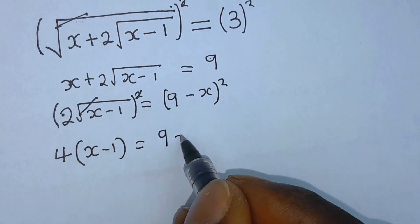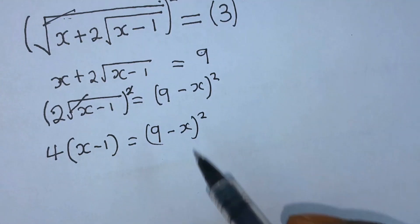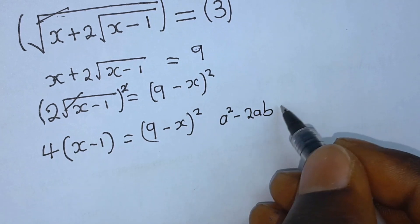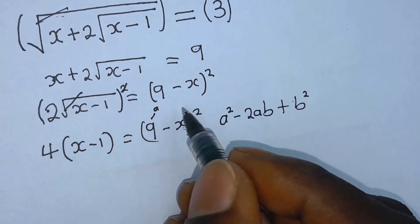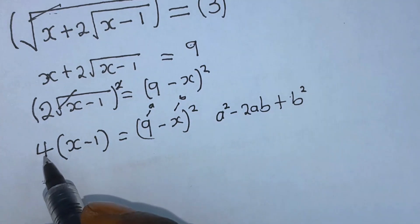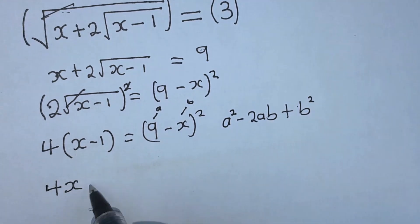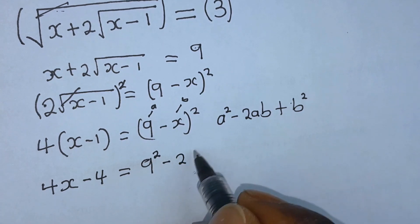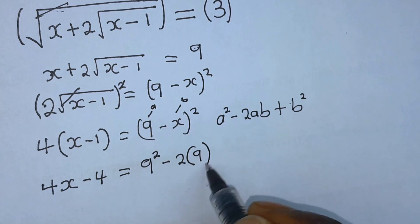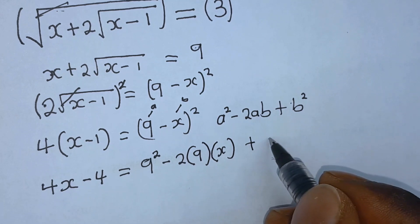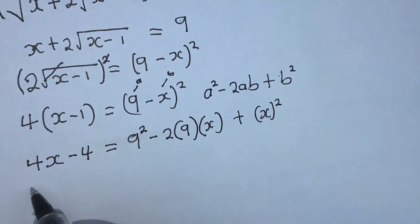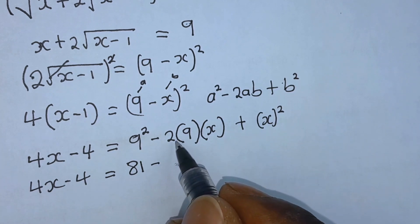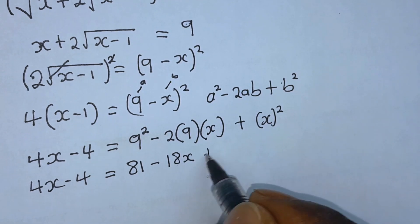Which equals 9 minus x squared. Let's expand this bracket using the formula a squared minus 2ab plus b squared, where 9 is a and x is b. 4 times x gives 4x, 4 times minus 1 gives minus 4, which equals 9 squared minus 2 times 9 times x plus x squared. So 4x minus 4 equals 81 minus 18x plus x squared.